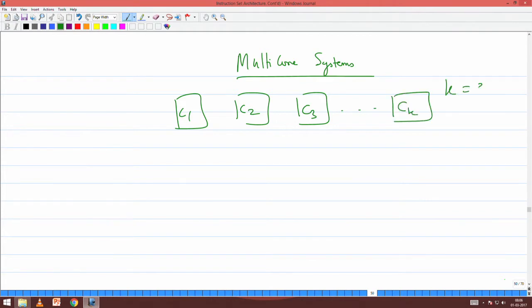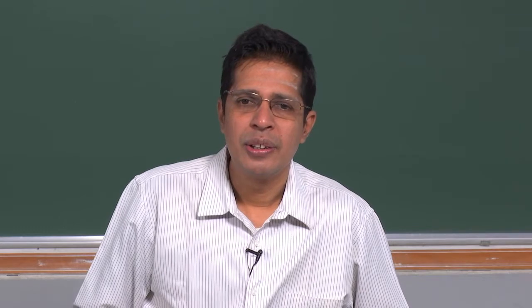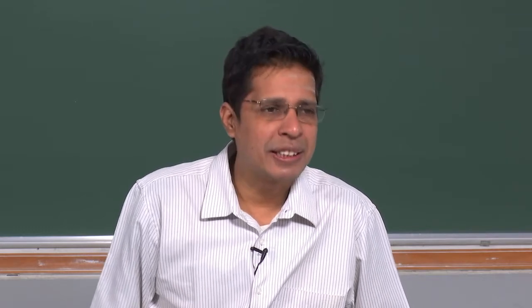Today, K can be as big as 32. Instead of one superscalar Tomasulo out-of-order branch-predicted processor that we have seen, we would have 32 such cores. What should we learn in multicore? The most important thing is how all these things can work together.